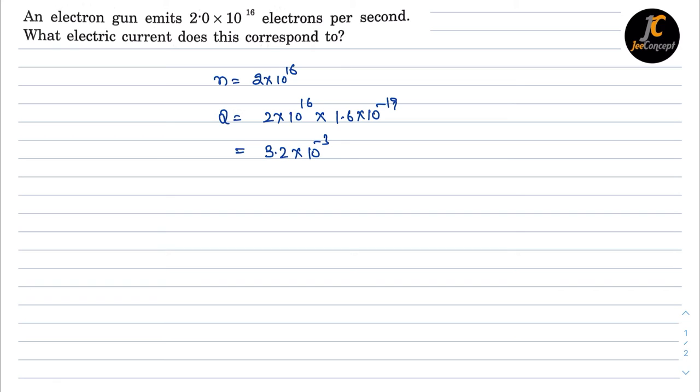Now we know that current is equal to Q by t, so that means 3.2×10^-3 upon 1, or I can say the current is going to be 3.2×10^-3 ampere.